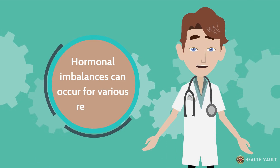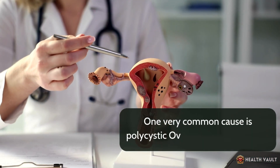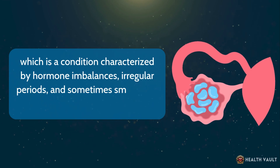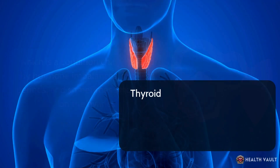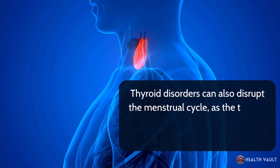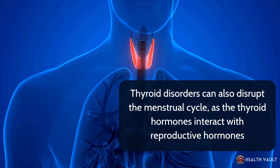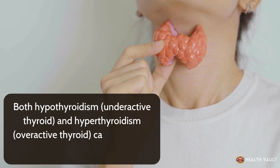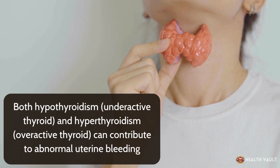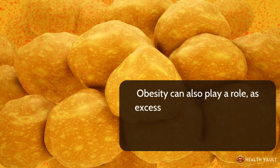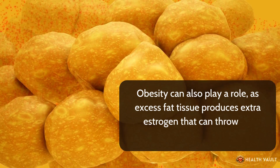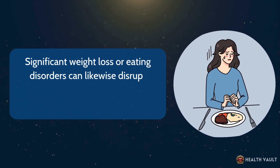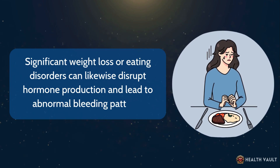Hormonal imbalances can occur for various reasons. One very common cause is polycystic ovary syndrome, a condition characterized by hormone imbalances, irregular periods, and sometimes small cysts on the ovaries. Thyroid disorders can also disrupt the menstrual cycle, as thyroid hormones interact with reproductive hormones — both hypothyroidism and hyperthyroidism can contribute to abnormal uterine bleeding. Obesity can also play a role, as excess fat tissue produces extra estrogen that can throw off hormonal balance. Significant weight loss or eating disorders can likewise disrupt hormone production and lead to abnormal bleeding patterns.